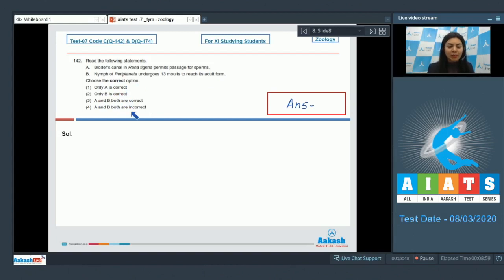Let's analyze both statements. Bidder's canal is present in male frogs, in their kidney, and transports only sperms, unlike the urinogenital duct which transports both urine and sperm. This is a correct statement.